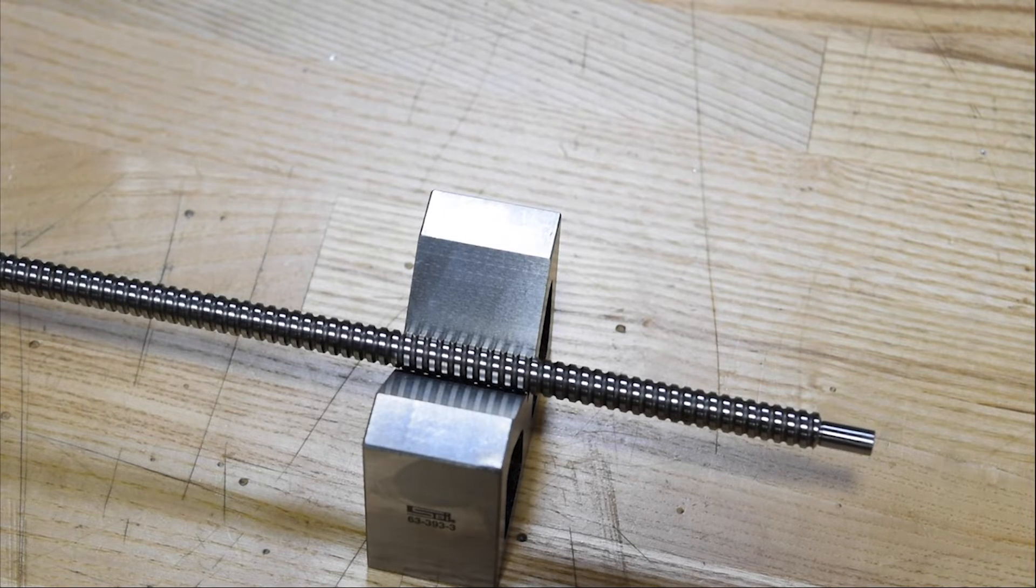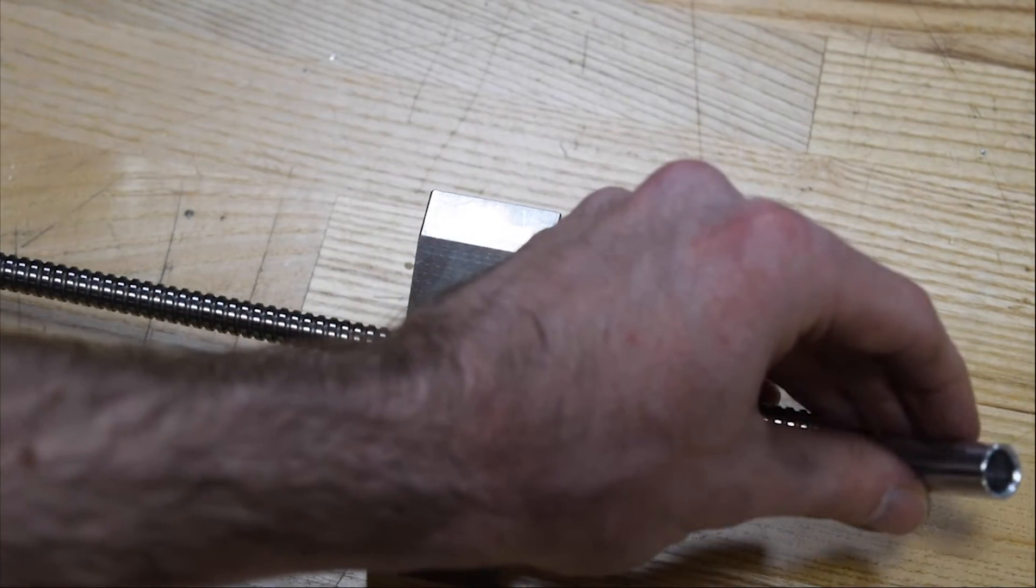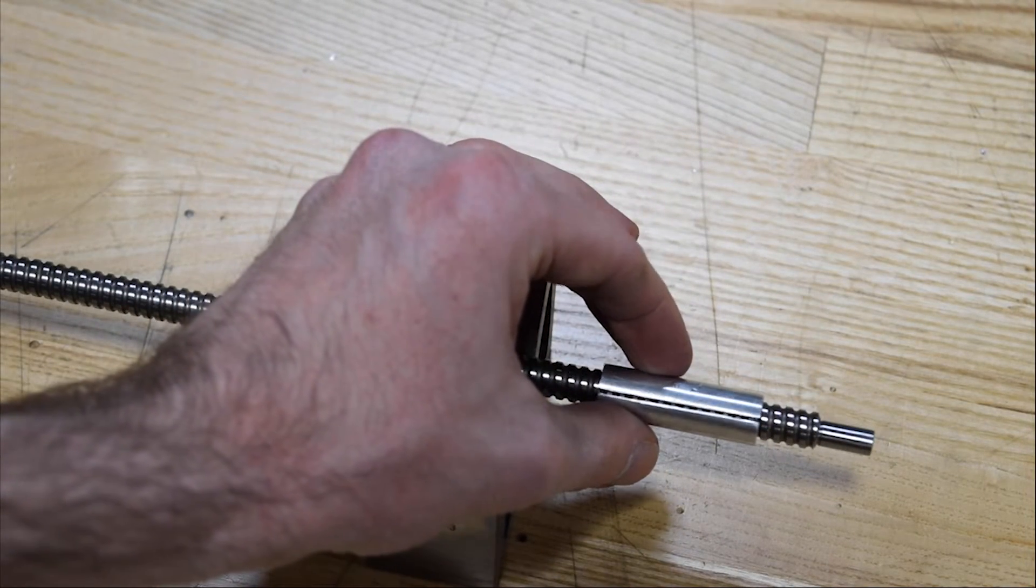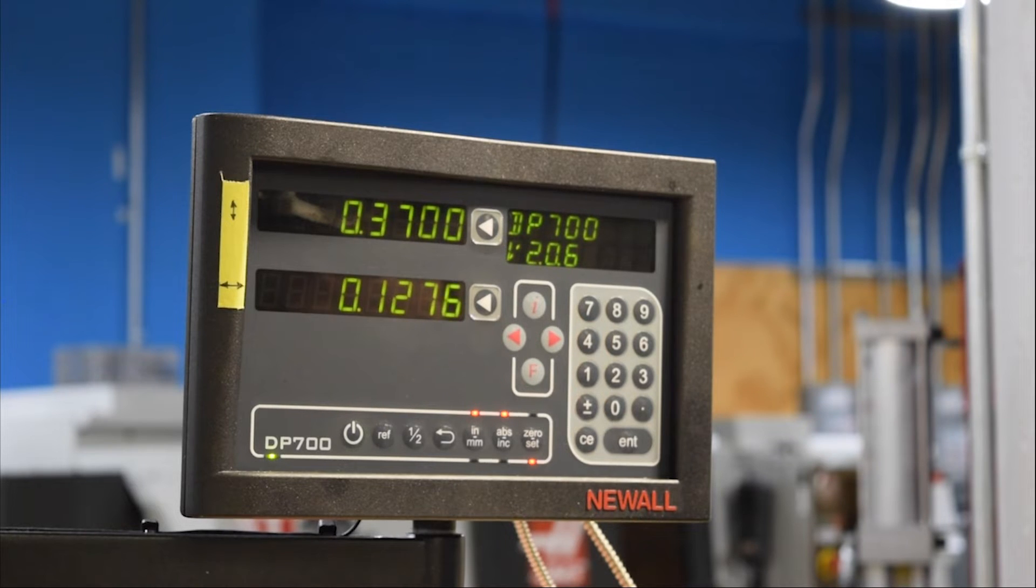Since we've got a good recipe of insert feed and speed figured out, we can machine the actual ball screw now. To protect the threads while the ball screw is held in the chuck, we made an aluminum bushing with a slot in it. And ball screws are only case hardened, which means they're extremely hard at the surface, but much softer towards the middle of the material. Sort of a nougat center sort of situation.